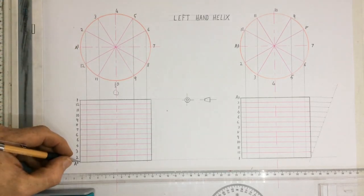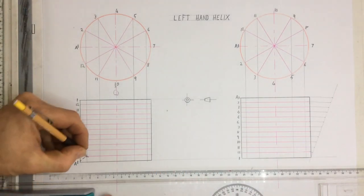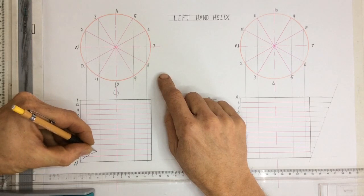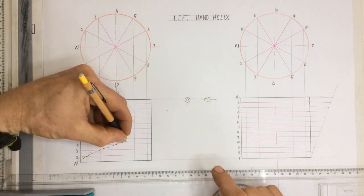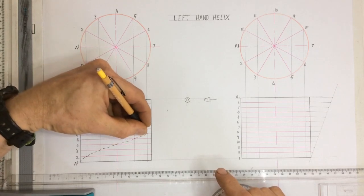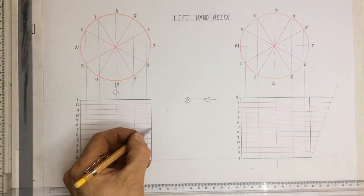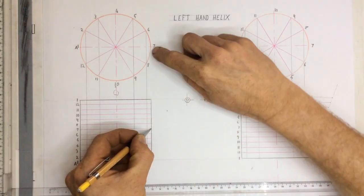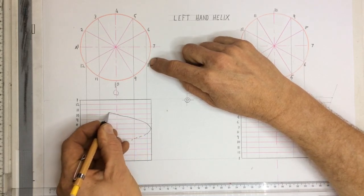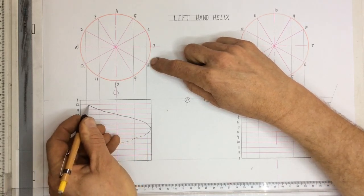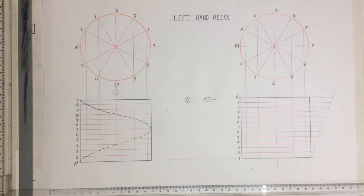So I come over here and I say from one to two I'm not able to see that so that would be hidden detail going up there. Two to three hidden detail, three to four still hidden detail, four to five hidden detail, five to six hidden detail, six to seven is hidden detail. I then go dark over here because I can now see from seven to eight, eight to nine, nine to ten, ten to eleven, eleven to twelve and going to one. There's the one helix done.